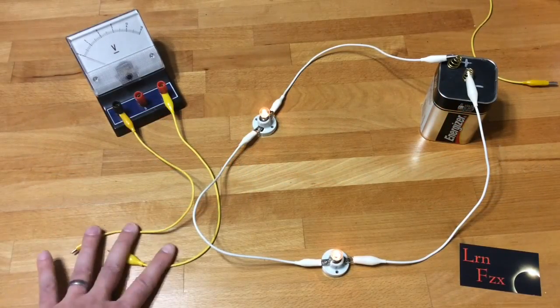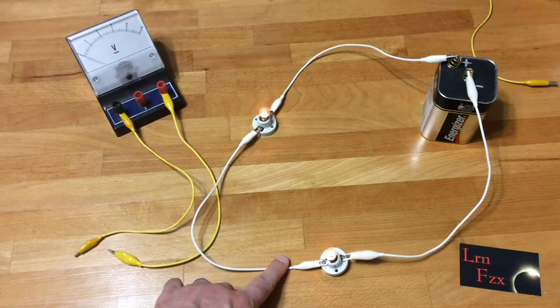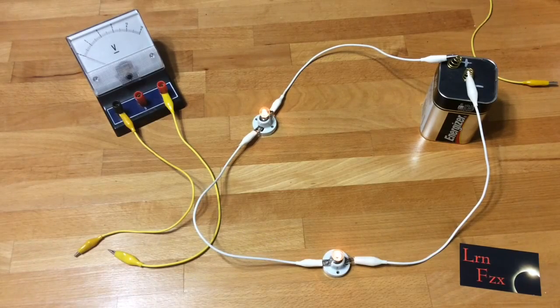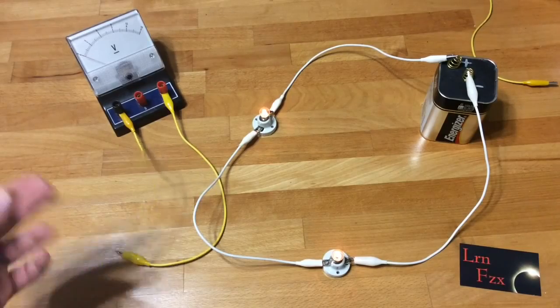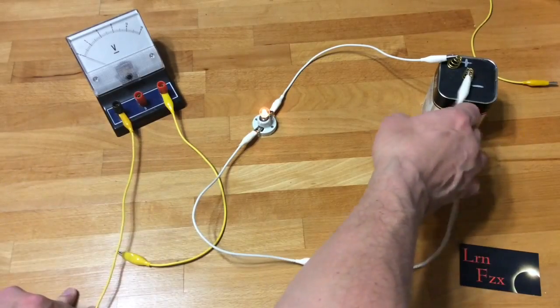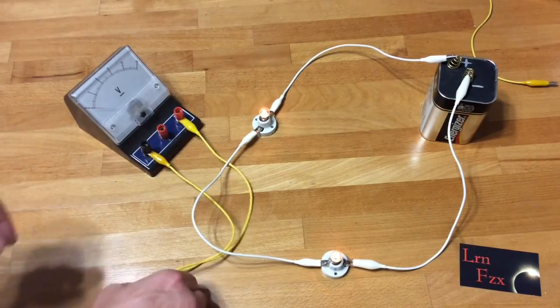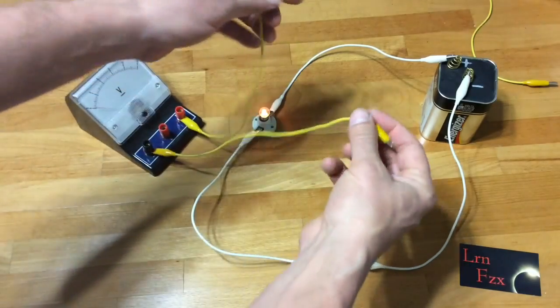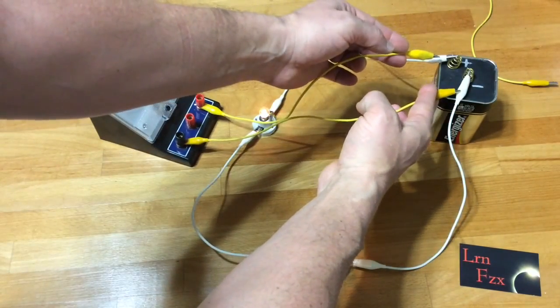The voltmeter has a positive and negative lead, and each of the components has a positive and negative lead. This is the negative lead connected to the negative terminal of the battery, and the positive lead to the positive terminal.